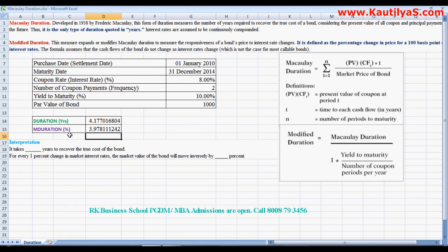MDURATION, that is modified Macaulay duration, is 3.978. What it says is for every 1% change in the market interest rates, the market value of the bond will move inversely by 3.978%.